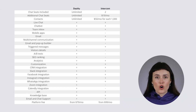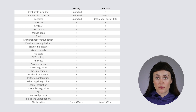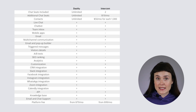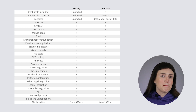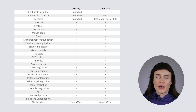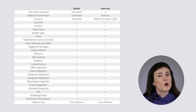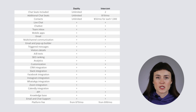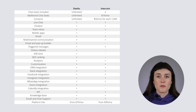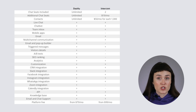As for the differences, in Intercom you will have only two agent seats for free, while Dashly provides an unlimited number of seats. There are many things missing on Intercom, like there is no mobile app, no pop-up and email builders, no A/B testing feature, and also no Zoom and Calendly integrations.